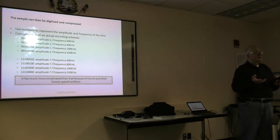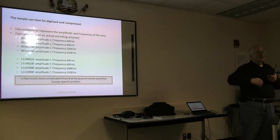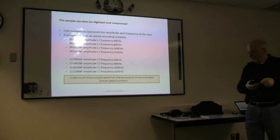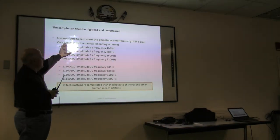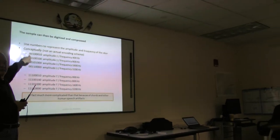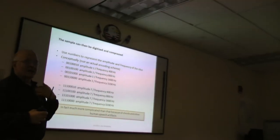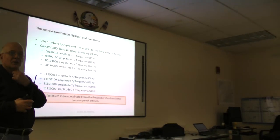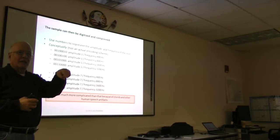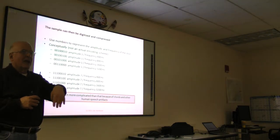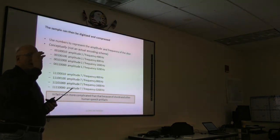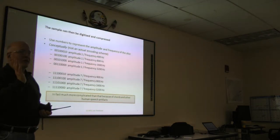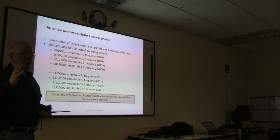Once you take a sample you can start digitizing it by assigning specific binary values to represent your frequency and amplitude. For example, the rightmost five bits represent the frequency and the leftmost three represent the amplitude. In reality, for human voice it's much more complicated because you have to deal with chords — where your voice produces multiple frequencies at once. But this is the basic concept. The word for this is encoding, which is allowed under FCC regulations and simply means a representation without trying to hide the meaning.